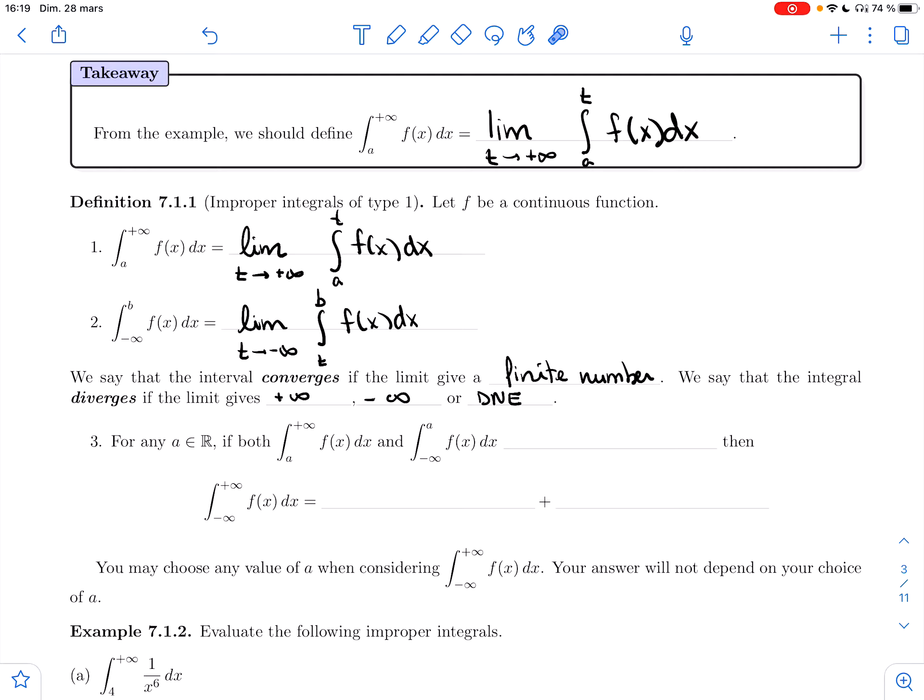For any a in ℝ, if both the integral from a to positive infinity and the integral from minus infinity to a converge, so both give you a finite number, then you could make sense of the integral from minus infinity to positive infinity. That should be the integral from minus infinity to a of f(x)dx plus the integral from a to positive infinity of f(x)dx.